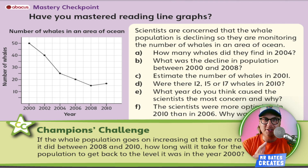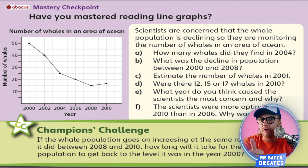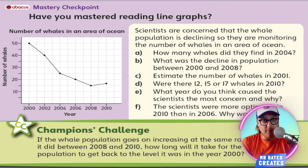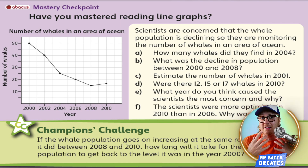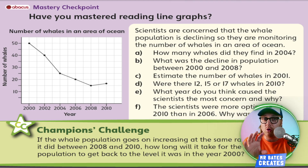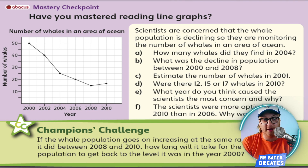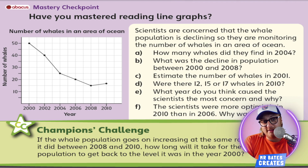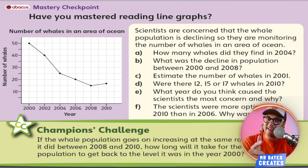So here's a little challenge for you to do at home or at school. All you're going to need is a piece of paper, a pen, and a ruler — or you could do this on a whiteboard if you'd like to as well. Number of whales in the area of an ocean — there's our number of whales. You can see the chart and the information there. It's already been done for you, but what you're going to need to do is answer the questions on the right-hand side. Have a look at the chart and the questions that need to be answered. If you're at school, teacher, pause this video. If you're at home, hit that pause button and give this a go by yourself.